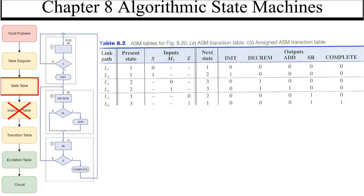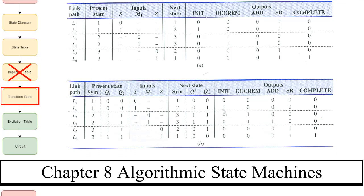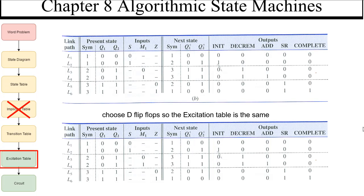Now what we want to do is build the transition table. The transition table is where we say the present state circle one is going to be zero zero, wherever there's a one. Wherever there's a two we write down zero one, and wherever there's a three we write down one one. That's it for the transition table. There is no implicant table because the outputs change — it's possible that two goes straight to three and we could have combined two and three, but the outputs are different. The transition table moves to the excitation table if we choose D flip-flop.